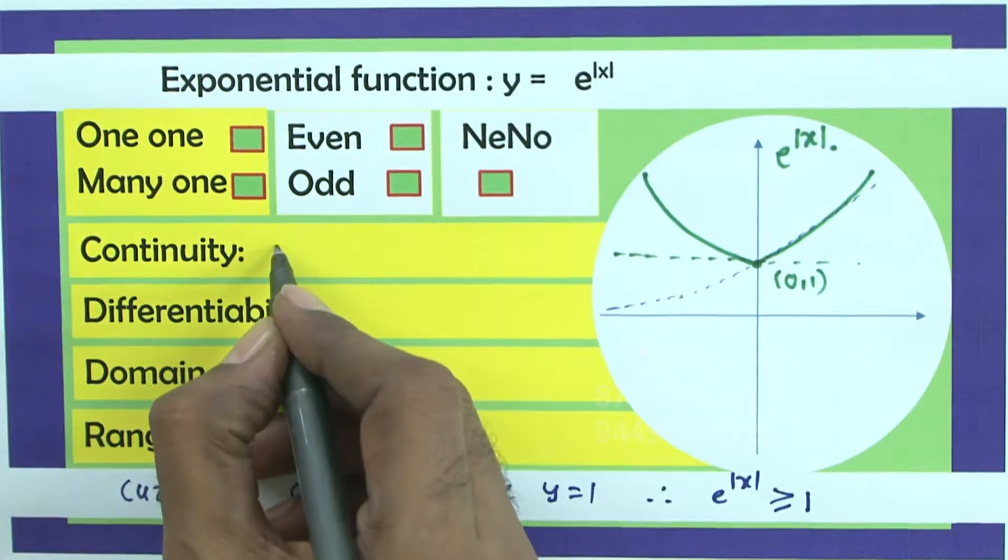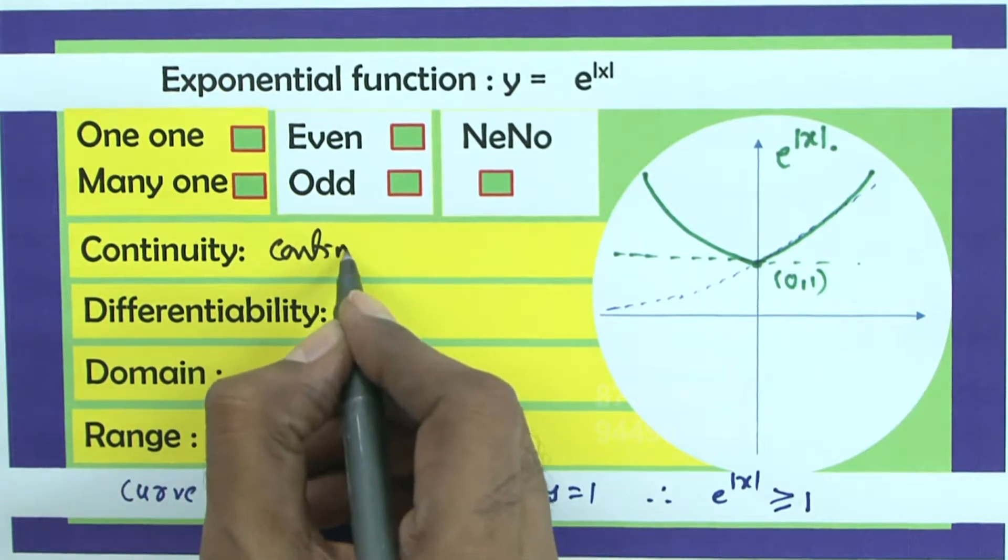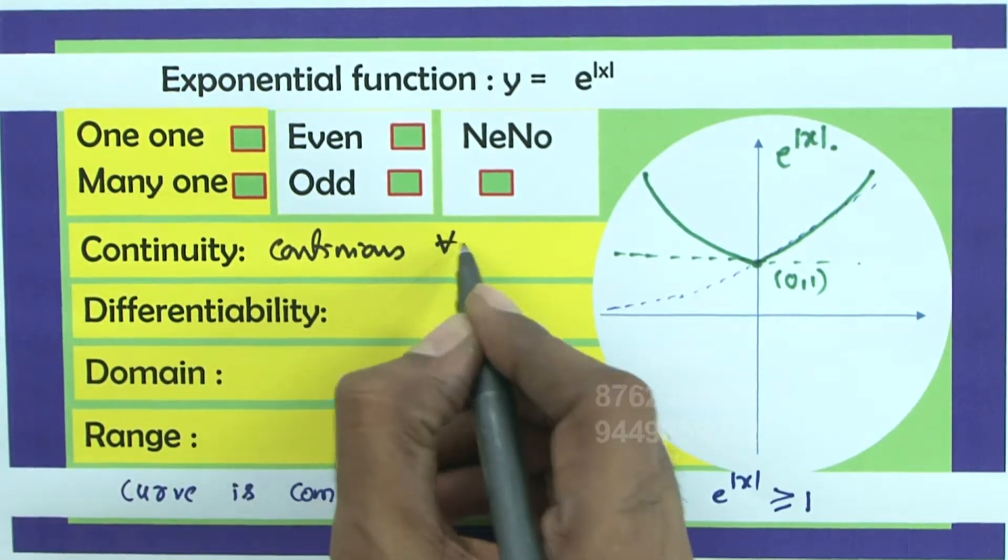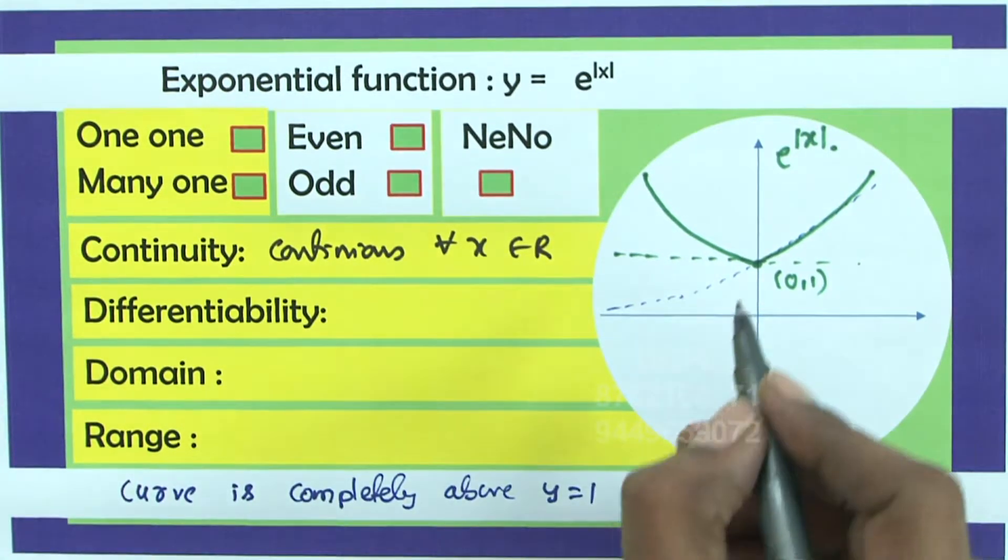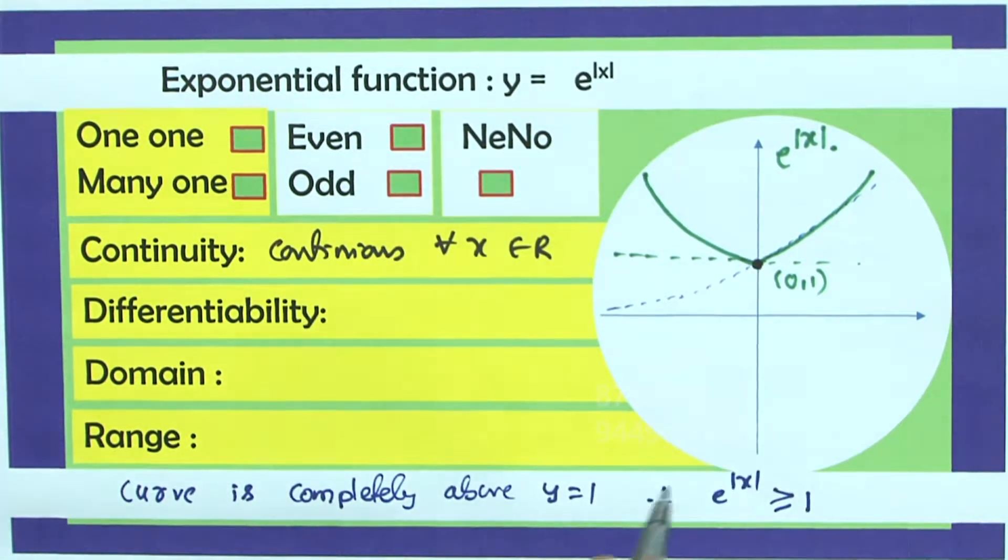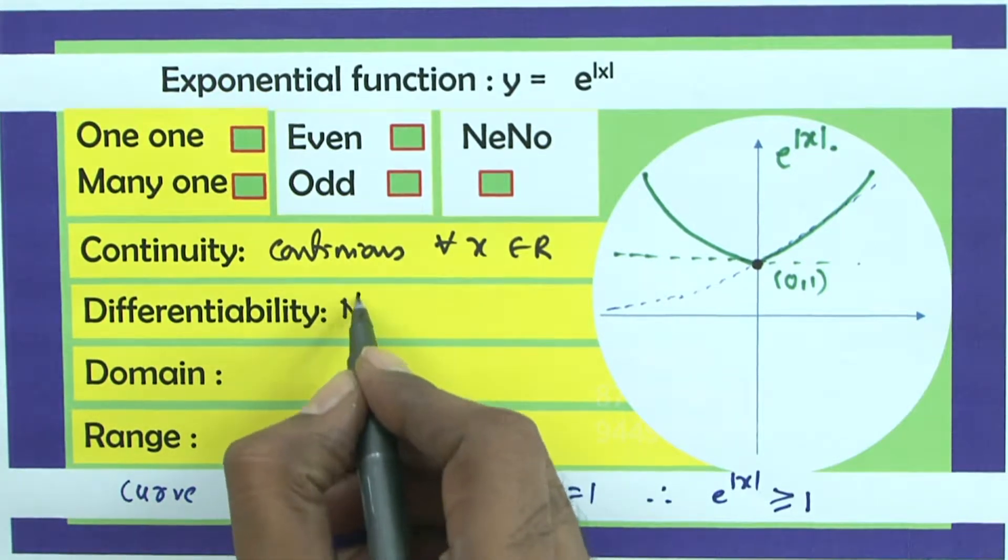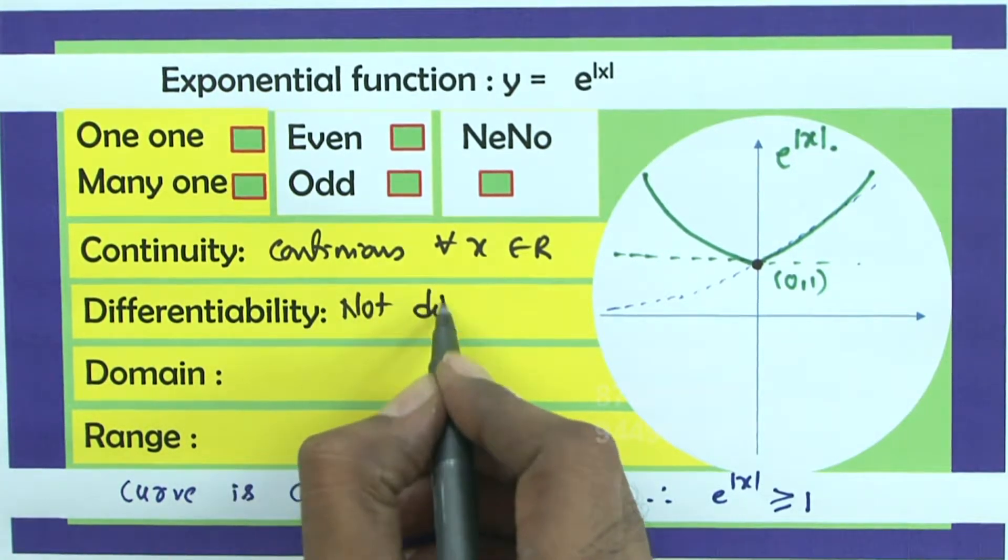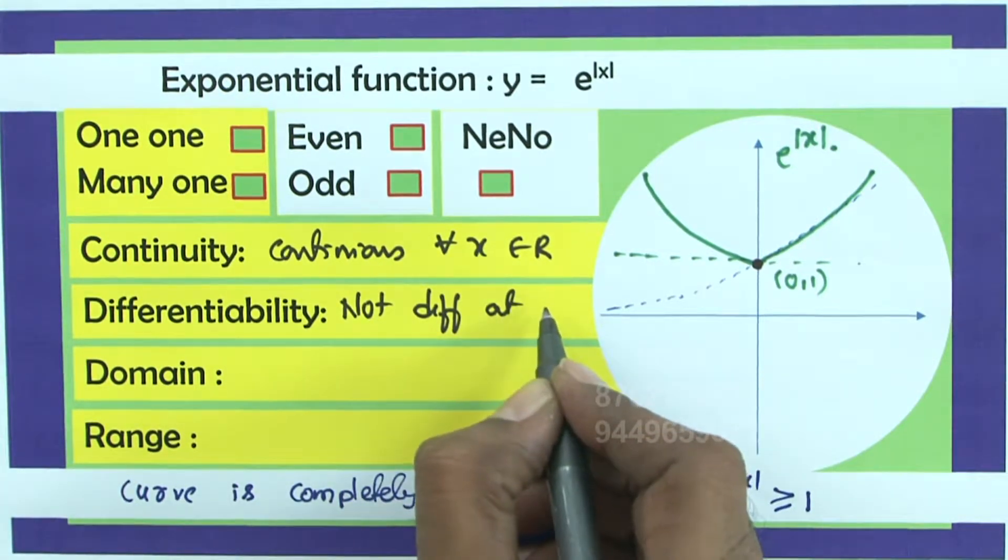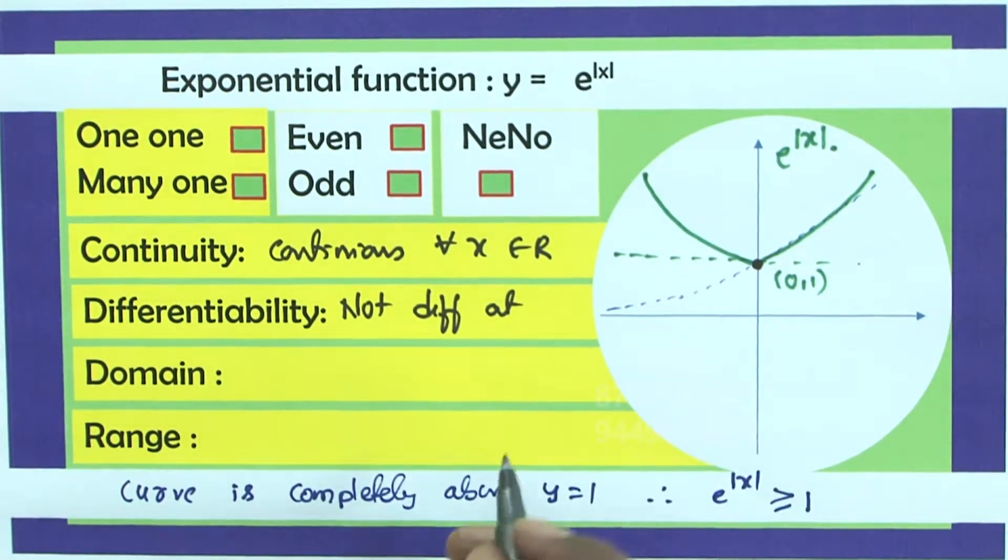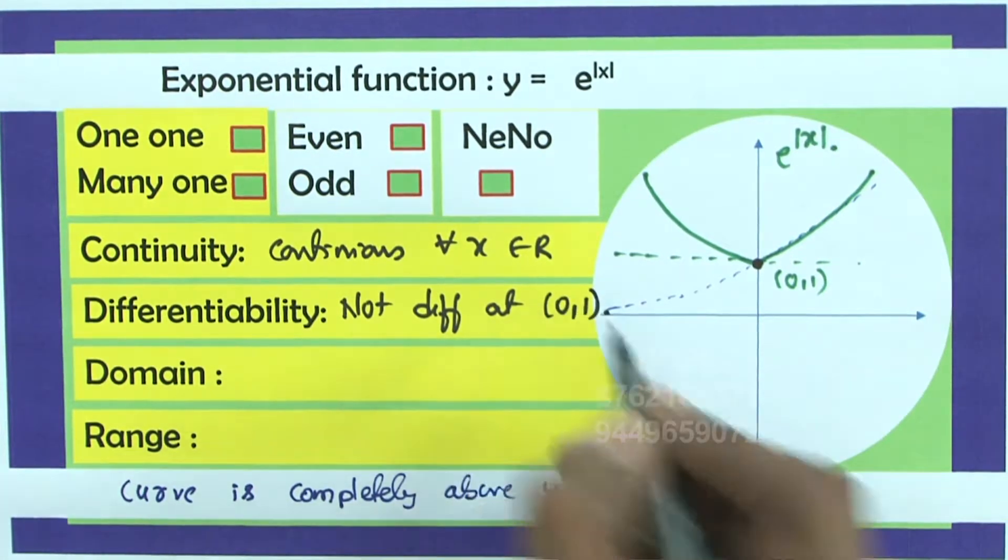So continuity means continuous for all x belongs to set of real numbers. But it is not differentiable here because of sharp edge. So not differentiable at x is equal to 0 and y is equal to 1. You can say 0 comma 1.